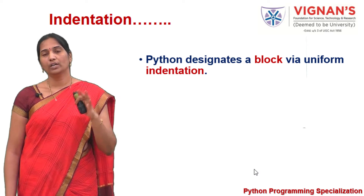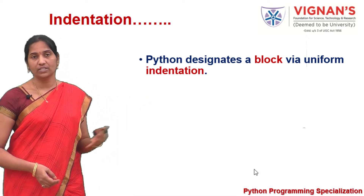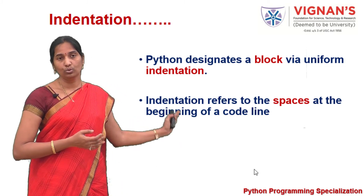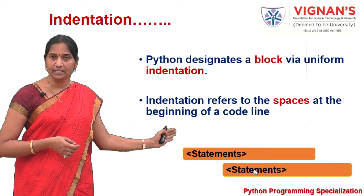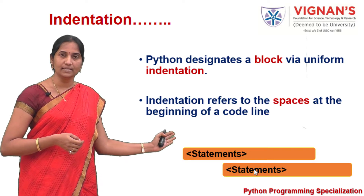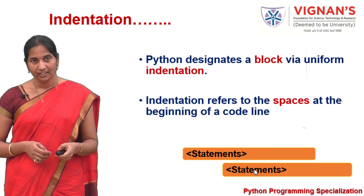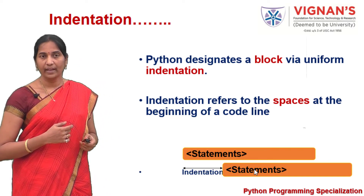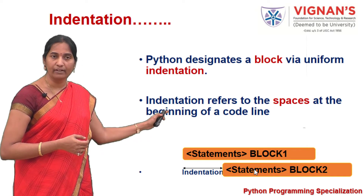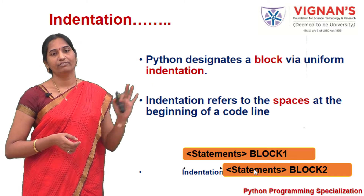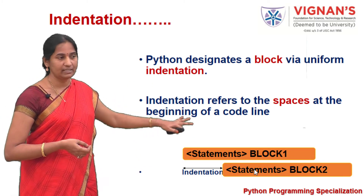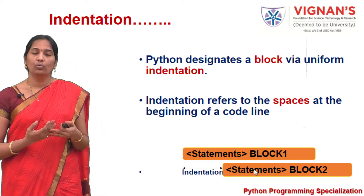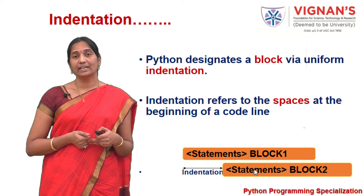To avoid syntactical and logical errors, Python designates a block of statements via uniform indentation. Indentation refers to the spaces left at the beginning of a statement. If you observe, the first set of statements starts at a specific column, and the second set starts after leaving certain spaces. Different indentations indicate different blocks — the first set belongs to block one, and the second set belongs to block two.